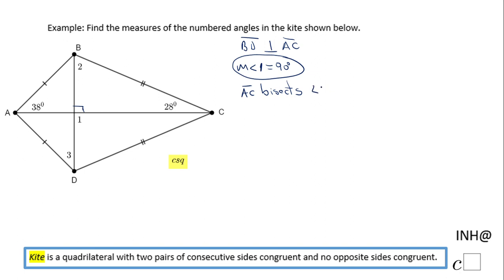So angles BAD and BCD are bisected by AC. That is a property of kites. So yes, these two angles are congruent, so this angle is 38 degrees. And these two angles are congruent, so this angle here is 28 degrees. If you have an accurate diagram, you can see that property.